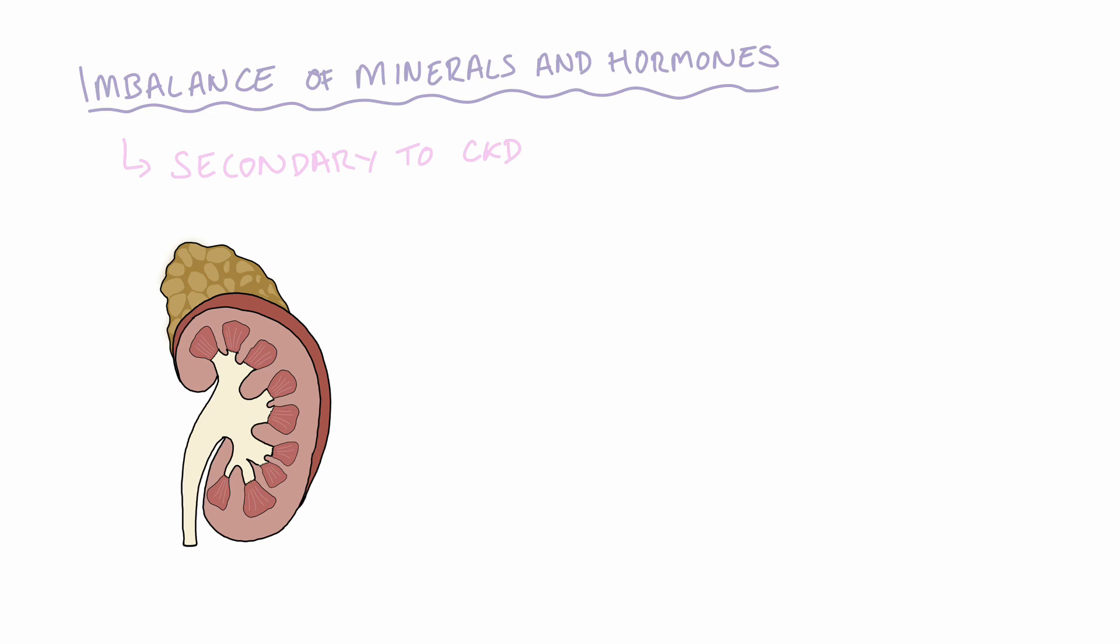in stage 2 CKD, where glomerular filtration rate is still quite high, between 60 and 89. For patients with end-stage renal failure, which is a glomerular filtration rate of less than 15, over 90% of patients have renal bone disease.